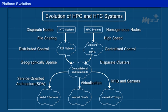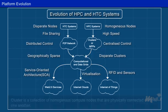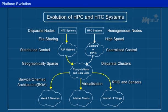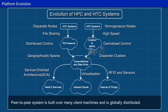The evolution of HPC and HTC systems is illustrated as shown. On the HPC side, supercomputers are being gradually replaced by clusters of cooperative computers, driven by a desire to share computing resources. A cluster is a collection of homogeneous compute nodes that are physically connected close to one another. On the HTC side, peer-to-peer networks are formed for distributed file sharing and content delivery applications, and a peer-to-peer system is built over many client machines and is globally distributed.